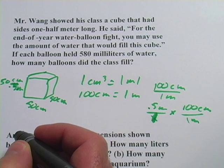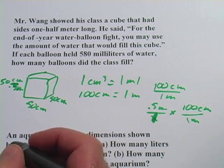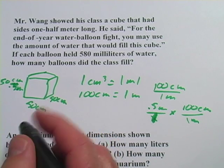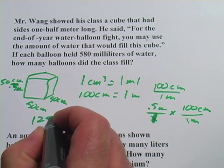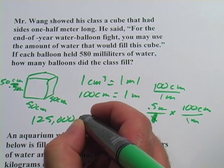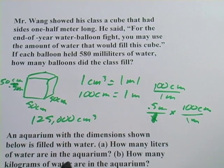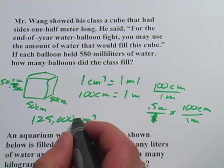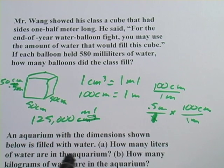So this cube is 50 centimeters by 50 centimeters by 50 centimeters. If we want to figure out how many cubic centimeters are in this cube, it's going to be 50 times 50 times 50. That's how we figure out the volume here. And that is a lot, it's 125,000 cubic centimeters, which means it's 125,000 milliliters.